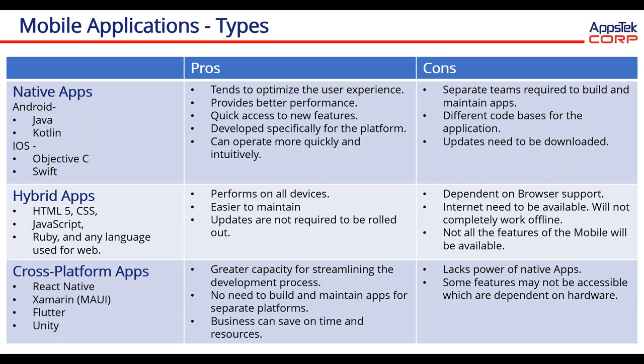Cross-platform apps run across both platforms and any device seamlessly. These apps are installed on devices like native apps, and the code is built close to the native app build — not exactly native, but the final output will be close to the native app. The advantage of this approach is it's quick to develop and the code is shared between different mobile OS. There is no need to build and maintain apps for separate platforms — a single application code will suffice for both platforms. Businesses can save time and resources in developing these applications.